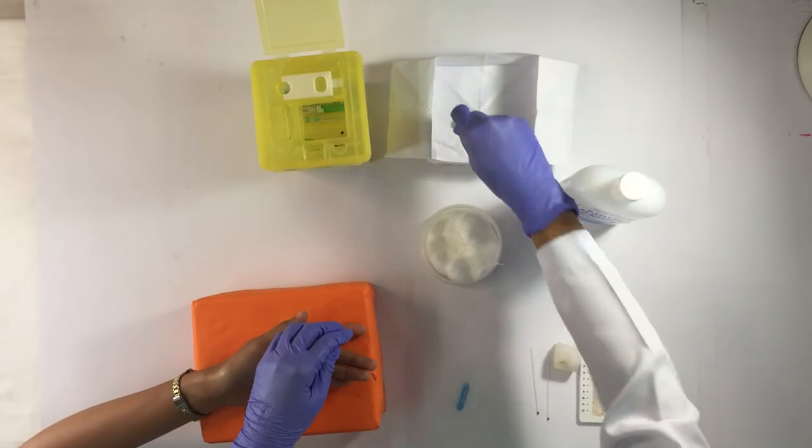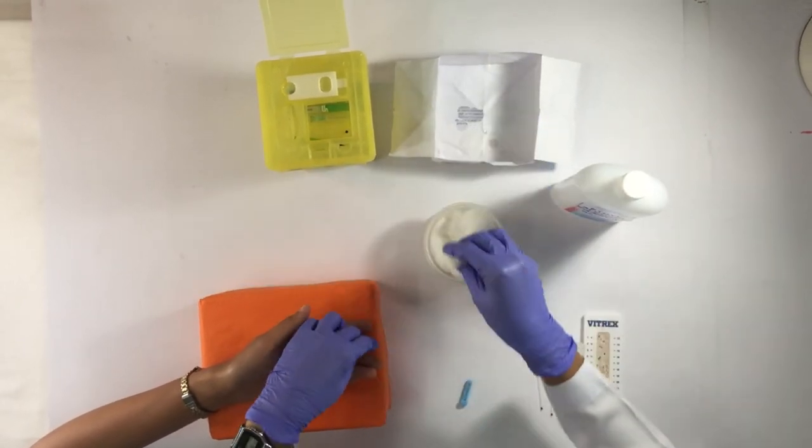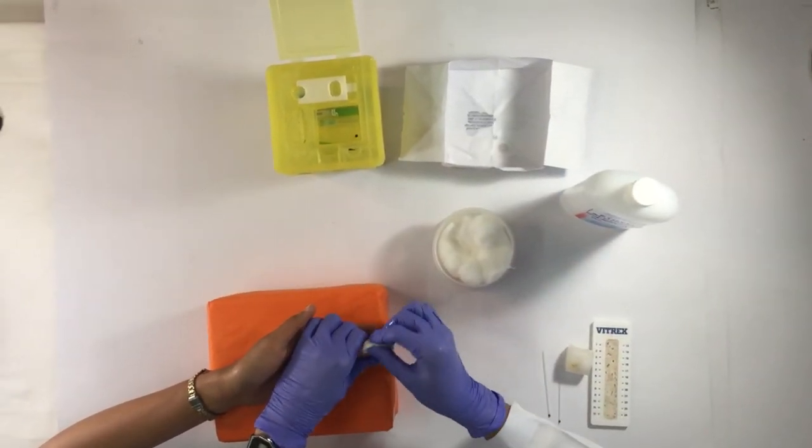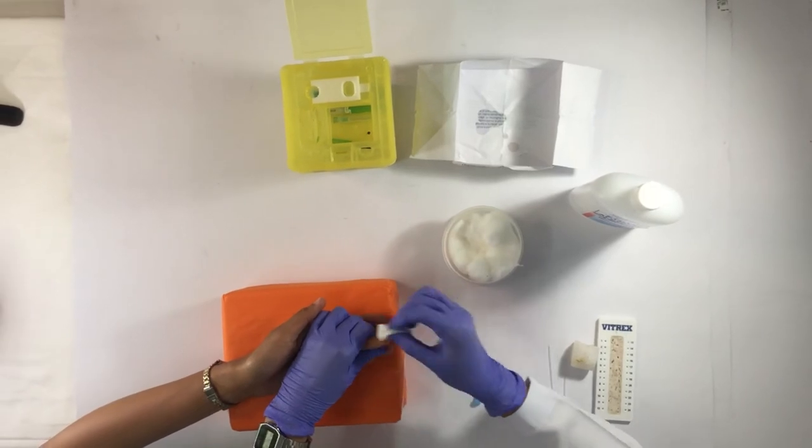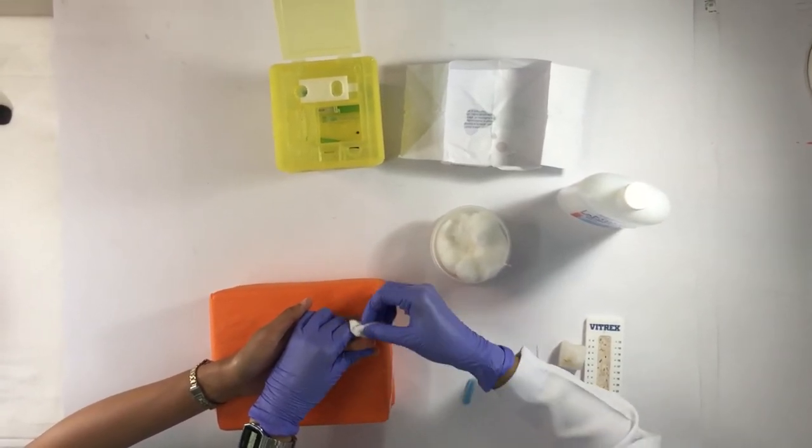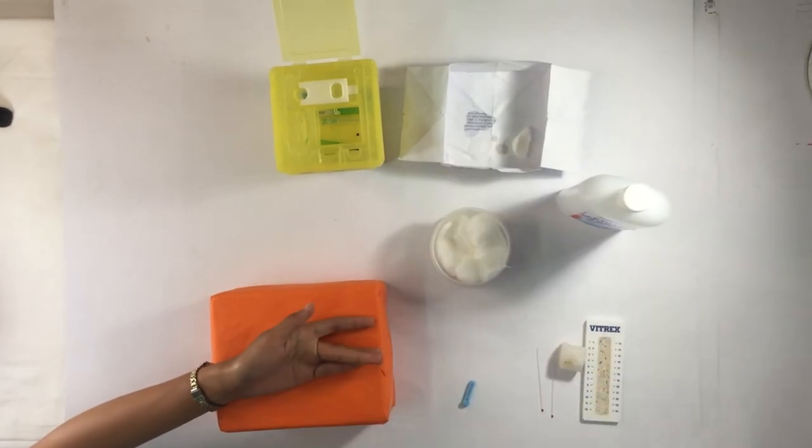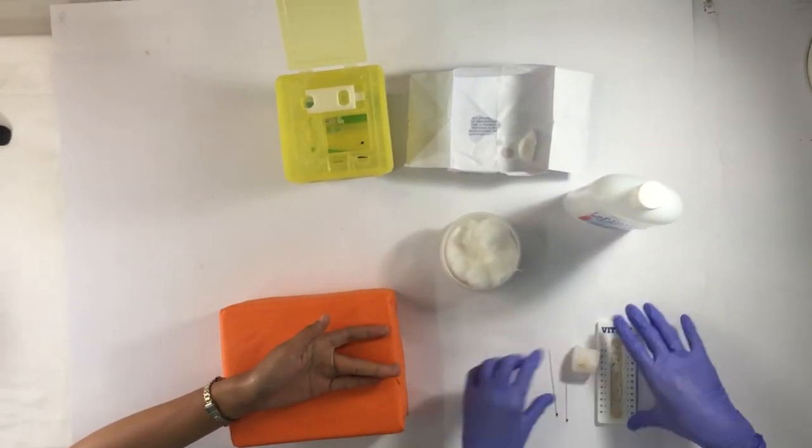Disinfect the site using cotton wet with alcohol. Remove excess alcohol from the cotton as much as possible. The manner of disinfecting the site must be in a circular fashion. Wait for the area to dry properly.